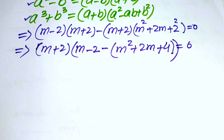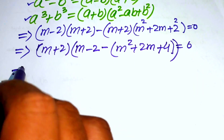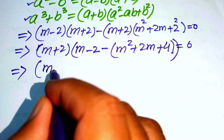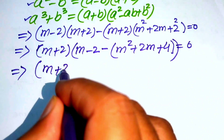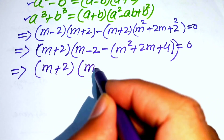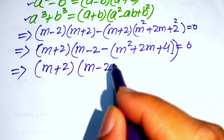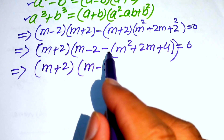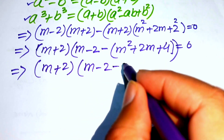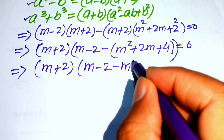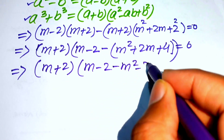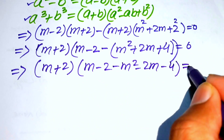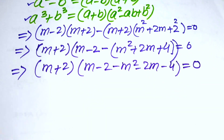Distributing the negative sign across the terms, we get (m plus 2) times (m minus 2 minus m squared minus 2m minus 4) equals 0.